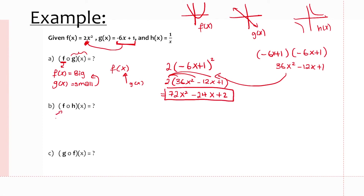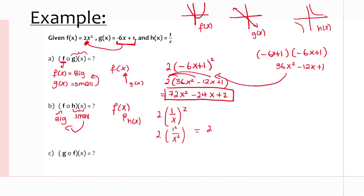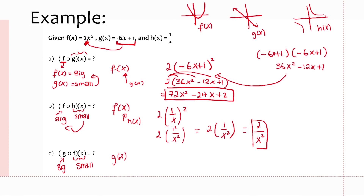For f(h(x)): h(x) equals 1 over x is the small function going inside f(x), the big function. I substitute h(x) in for x, squaring 1 over x to get 1 squared over x squared, so f(h(x)) equals 2 times 1 over x squared, which simplifies to 2 over x squared. The same logic applies for each composition — identify which is big and which is small, then substitute the small function in for x in the big function.